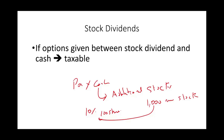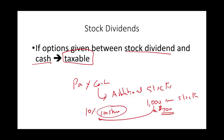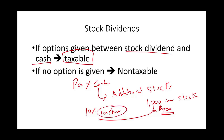If an option is given between a stock dividend and cash, the amount is taxable. For example, the company might say: would you like 100 new shares or $200 in cash? If they give you this option, then the $200 or the 100 shares are taxable. If no option is given — they simply say we're going to give you a stock dividend with no cash alternative — then the stock dividend is not taxable, because you can't pay the IRS when you don't have access to the cash.